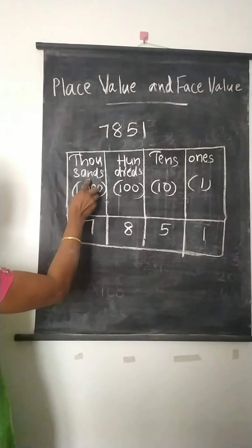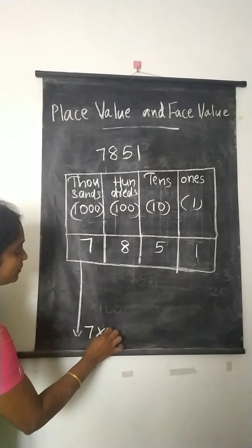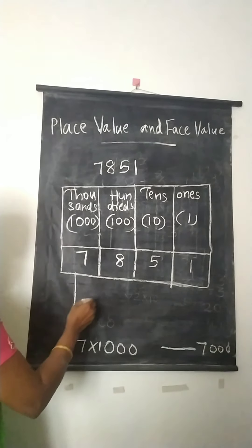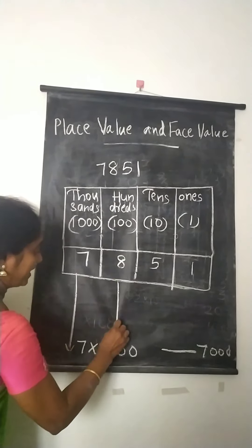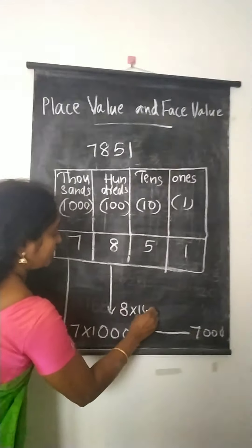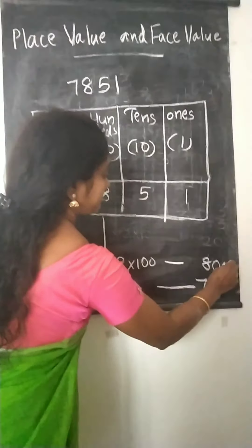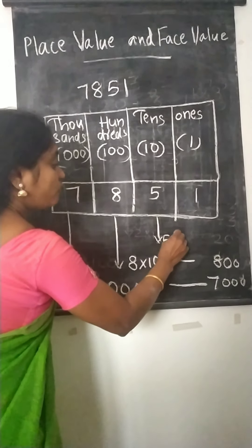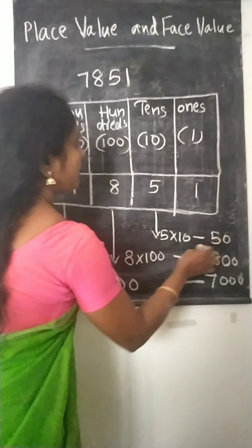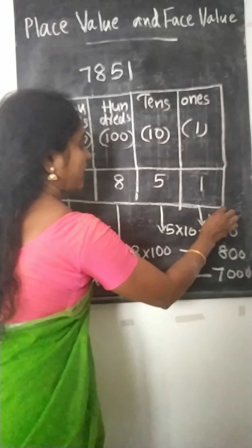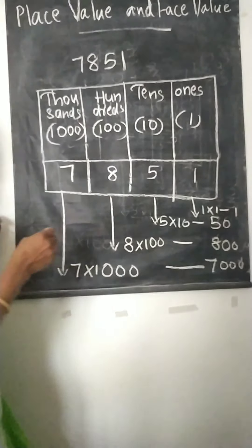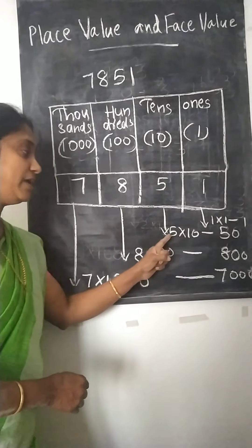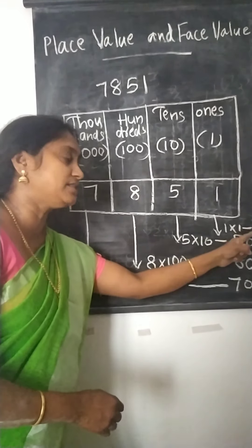As 7 lies in the 1000's place, the place value of 7 is 7 into 1000, that is 7,000. As 8 lies in the 100's place, the place value of 8 is 8 into 100, that is 800. As 5 lies in the 10's place, the place value of 5 is 5 into 10, that is 50. And as 1 lies in the 1's place, the place value of 1 is 1 into 1, that is 1. So the place value of 7 is 7,000, place value of 8 is 800, place value of 5 is 50, and place value of 1 is 1.